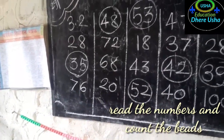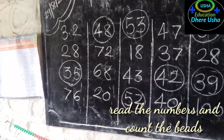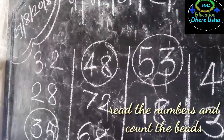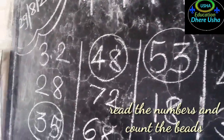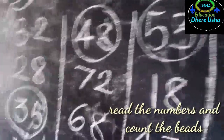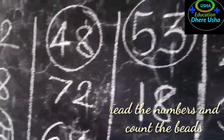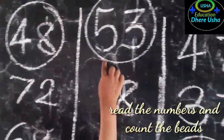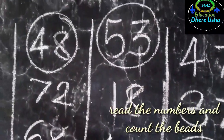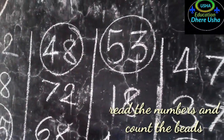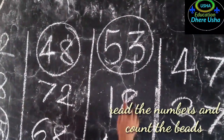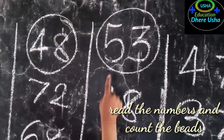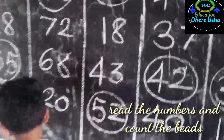Krishna, stand up. Read this number. Fifty-three. How many units? Three. How many tens? Five. Count the beads.